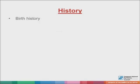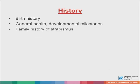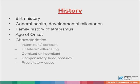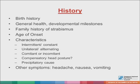In the history, a thorough birth history is important, including gestational age, birth weight, and if there was any ROP present, as well as general health and developmental milestones. Family history of strabismus is important, along with age of onset and characteristics of the strabismus — whether it's constant or intermittent, present in one eye or alternating, comitant or incomitant, if there's any compensatory head posture, and if there was any precipitating cause noted. Other symptoms suggesting a sinister neurological cause, such as headache, nausea and vomiting, also need to be elicited, along with any history of trauma.